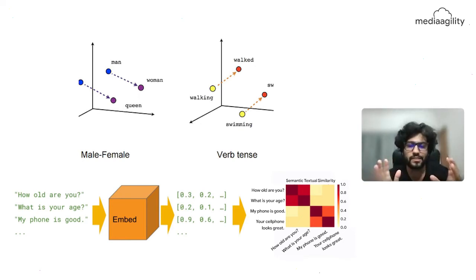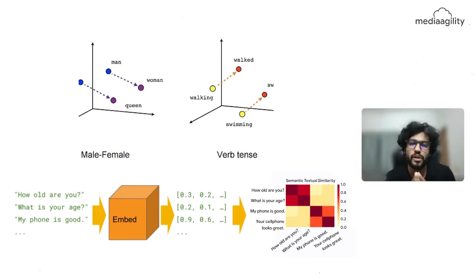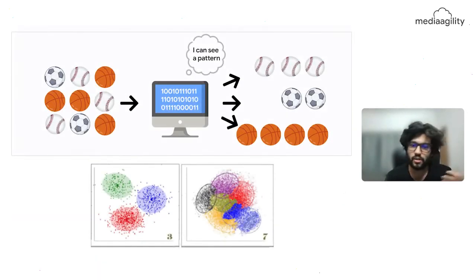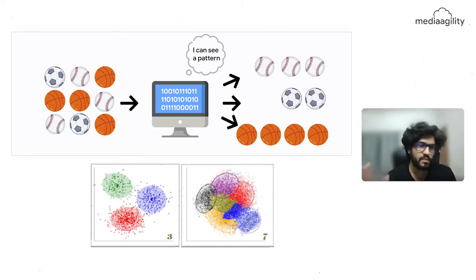We tried clustering on word2vec vectors, but then we thought: why stop there? We already have segmented sentences, so why not plot the entire sentence? Thanks to Google, TensorFlow, and ongoing research, we have the Universal Sentence Encoder. Instead of converting a single word into a vector, it converts the whole sentence into a vector. So we vectorized sentences and comments, then performed clustering on those.